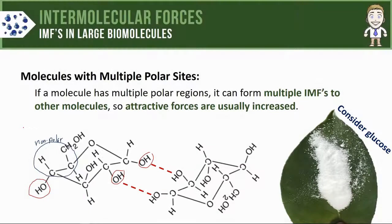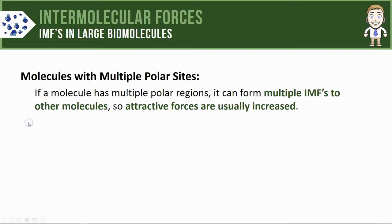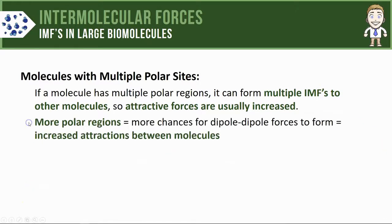Since there are multiple polar regions, that means there are multiple places where those polar regions can line up with other polar regions on other molecules. In this case, since both molecules meet the qualifications for a hydrogen bond to form, you might say that not one but two hydrogen bonds form between these two molecules. We can summarize this by simply saying: the more polar regions a molecule has, the more chances for dipole-dipole forces to form, which increases the attractions you'll see between molecules.